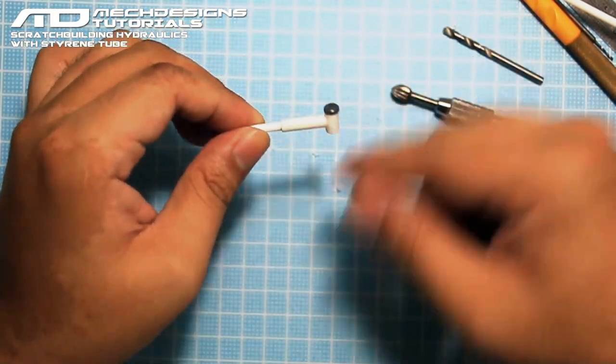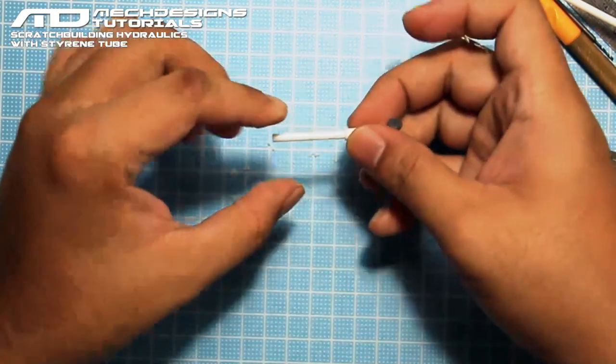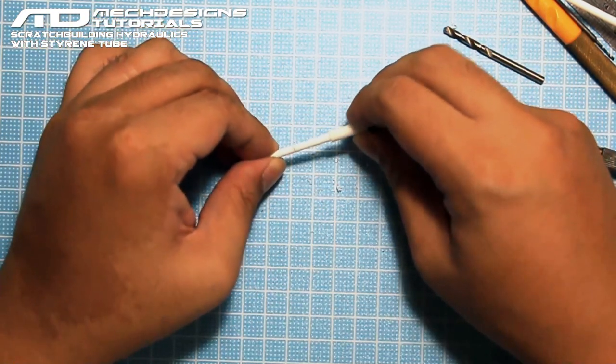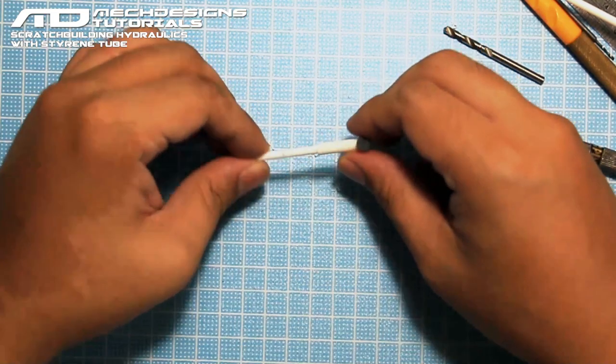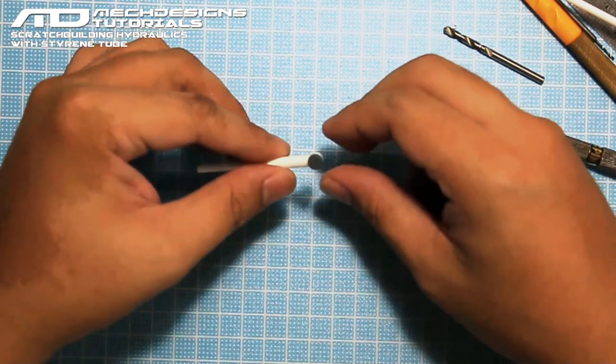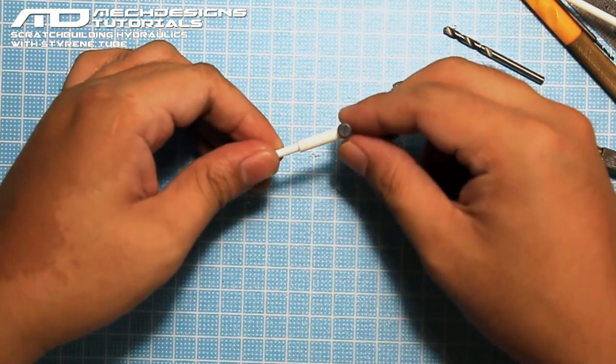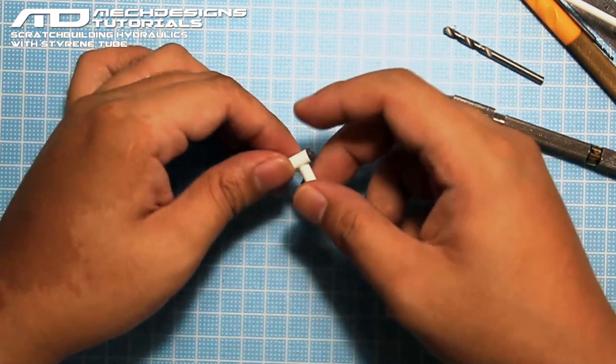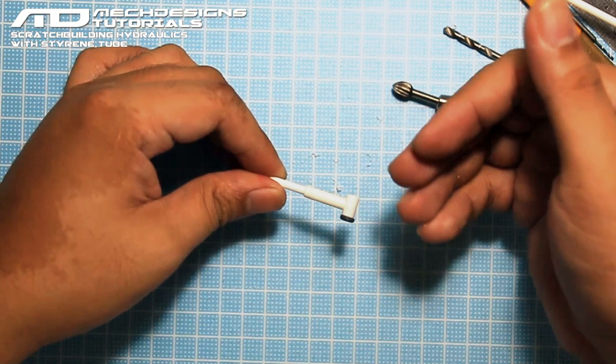So you could use the same method that we did on this end to the other side. So it's like you have two pieces working together, and it's up to your imagination how you're going to apply this. But as you can see, it's a very simple way on creating hydraulics or pistons that you could use for additional details on your kits.